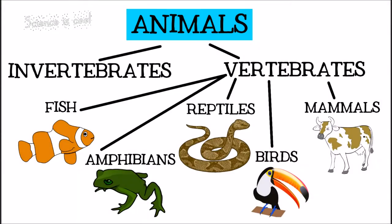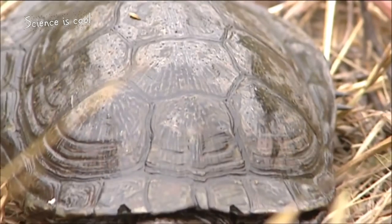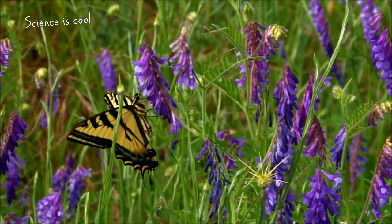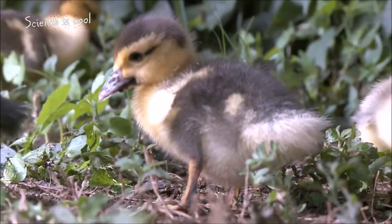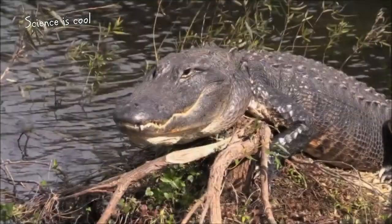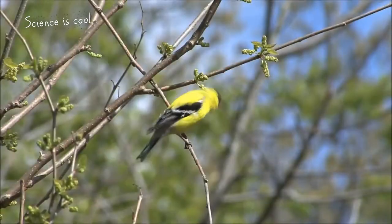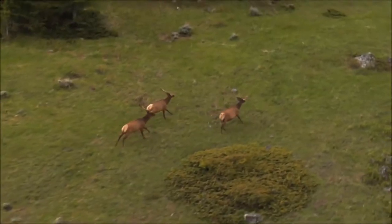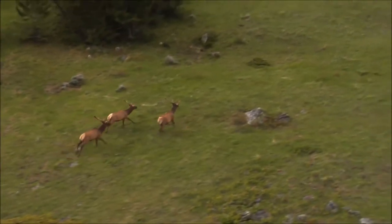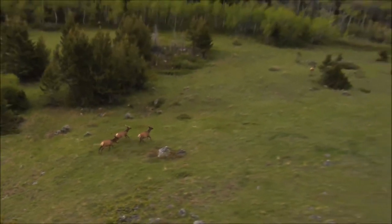The animal kingdom is classified into many different groups based on animal characteristics to help us understand the world around us. Saying an animal is an invertebrate, a vertebrate, a fish, amphibian, reptile, bird, or mammal tells us many things about it that can help us to understand its needs and behavior.